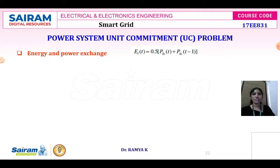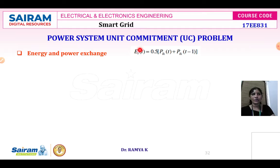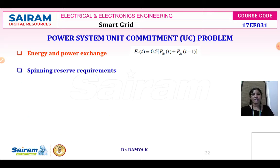The energy and power exchange formula is: EI(t) equals 0.5 times [PGi(t) plus PGi(t+1)]. Here EI(t) is the energy output of the ith unit at hour t. PGi(t) is the power generation output at the ith unit at hour t, and PGi(t+1) is the power generation output at the next hour. This is the energy power exchange constraint.